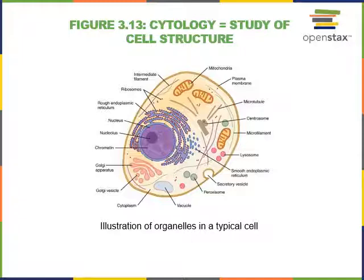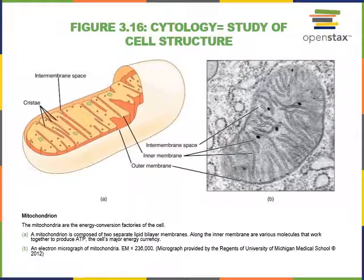We can magnify even further and look deep inside a cell to see the structures inside, called organelles. Here we can see an illustration of a specific organelle called a mitochondria, found inside cells. We can only view structures as small as the mitochondria — including the inner and outer membranes — using a special microscope called an electron microscope. The image on the right is taken with an electron microscope, showing the mitochondria magnified 236,000 times.